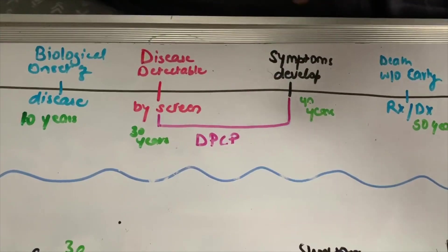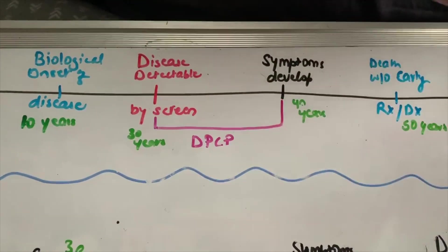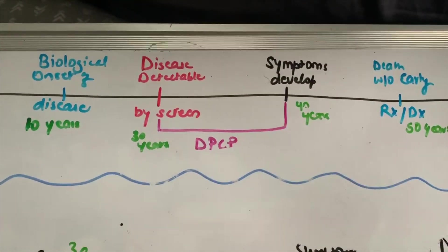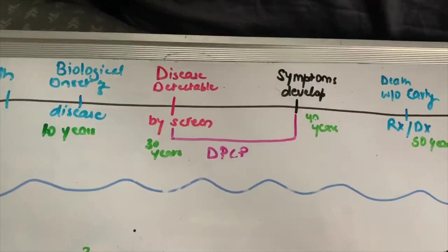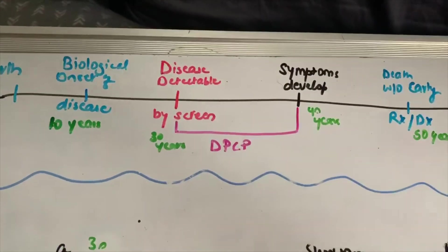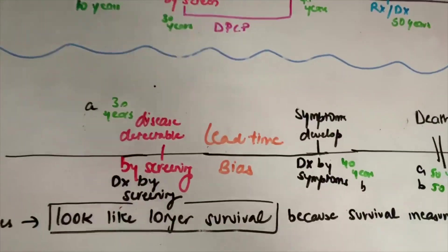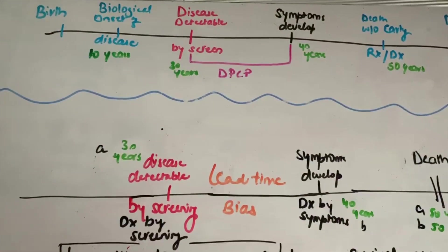So this is DPCP, where both the lead time and the length time biases occur. Okay, cool. So first, let's talk about lead time bias, and the DPCP thing will become even more clear.